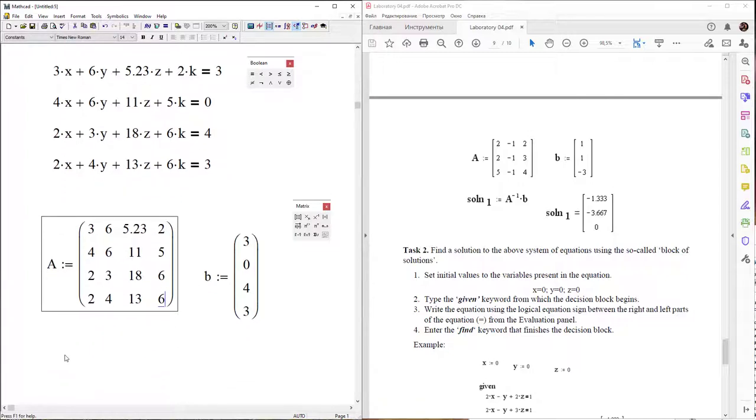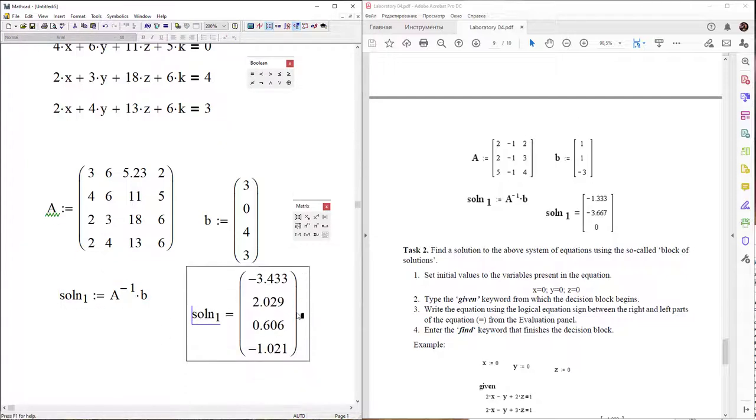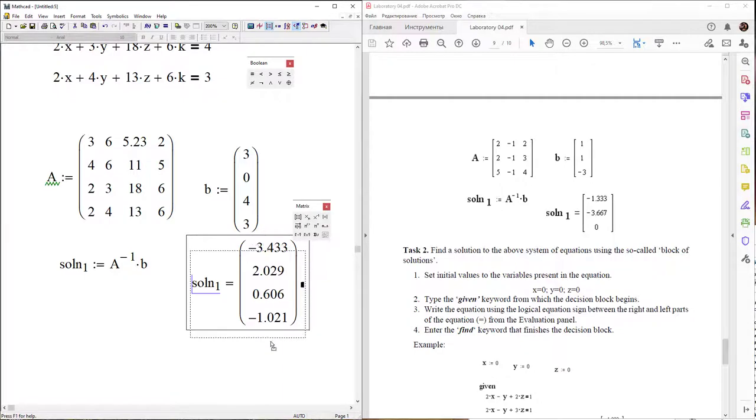Then use the function from matrix panel. Use subscript 1. Take the inverted matrix and multiply by B. So this is the first solution method.